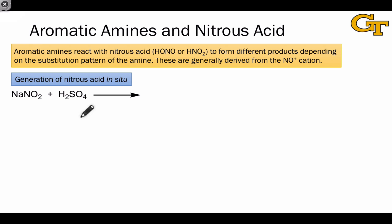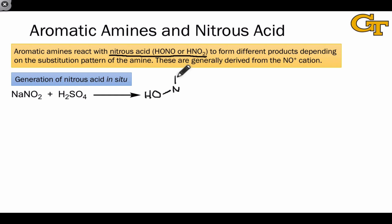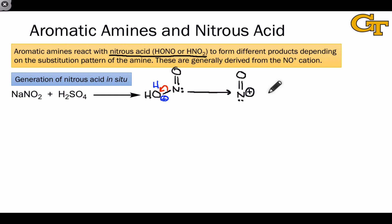Nitrous acid is written as HNO2 or HONO, with the latter being more descriptive of the structure. It is typically generated in situ from NaNO2 and sulfuric acid, meaning we mix these two reagents and never actually isolate the nitrous acid that forms. A Lewis structure of nitrous acid shows it is similar to nitric acid but missing one oxygen. Protonation of this intermediate generates a small amount of the NO-plus cation, a strong electrophile. Just as the NO2-plus cation is isoelectronic with CO2, the NO-plus cation is isoelectronic with carbon monoxide, but is a much stronger electrophile because of its positive charge.